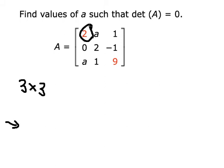So we have 2 here. So 2 multiplied by the matrix with 2, negative 1, 1, and 9.